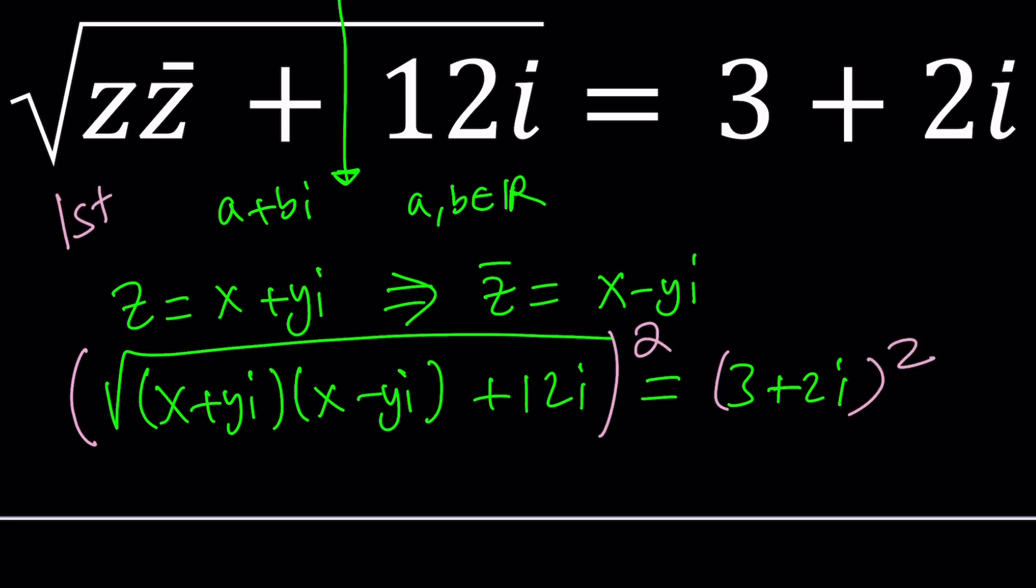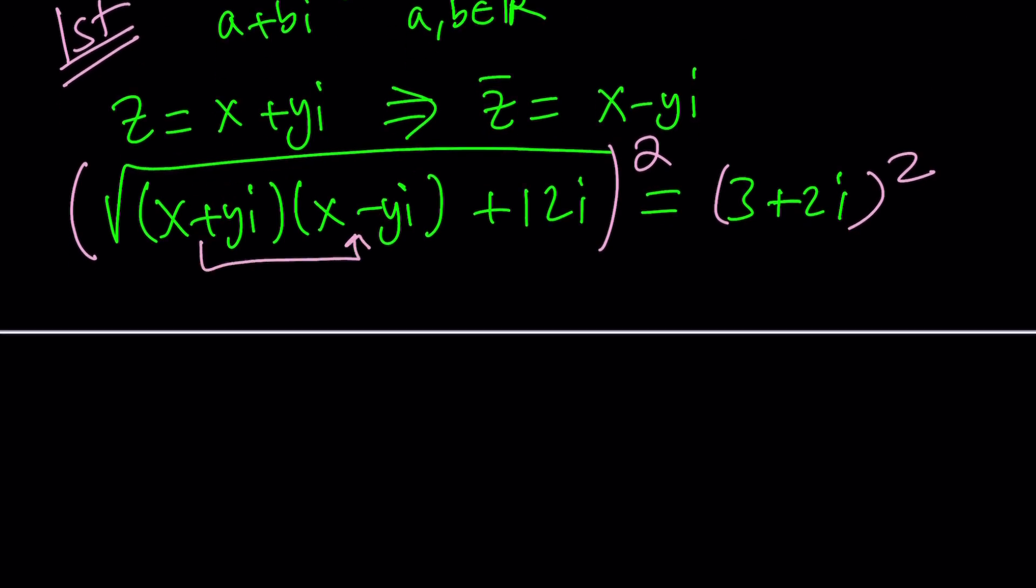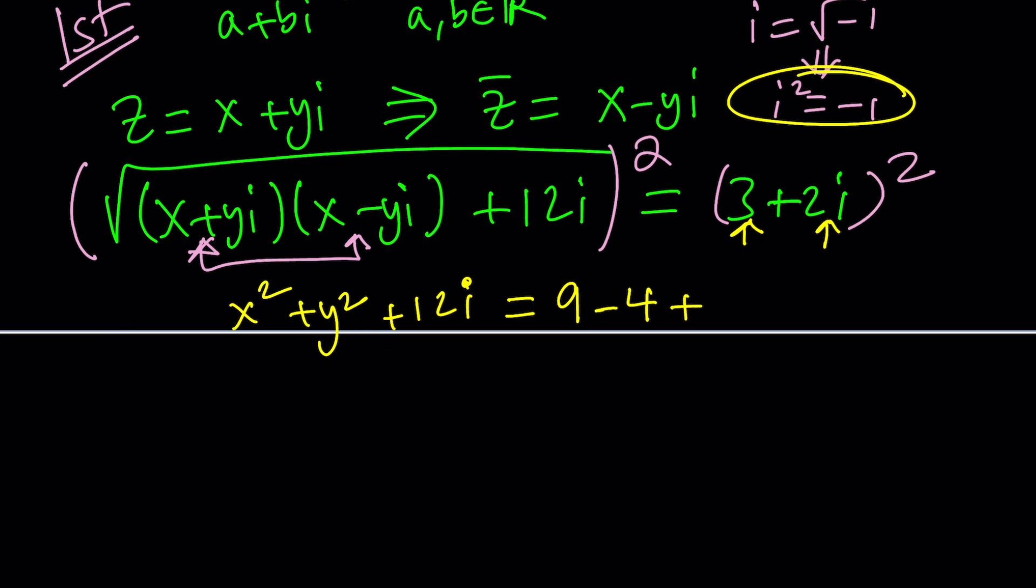By the way I'm calling this the first method because I'll show you an alternative. When we multiply these two things it looks like difference of two squares but since i is the square root of negative one, this implies that i squared is negative one which is something that you should never ever forget. It's super important. So when you multiply it just becomes x squared plus y squared. And then you get plus 12i and since we squared both sides we already got rid of the radical. On the right hand side, nine plus 4 i squared but i squared is negative one, so it's nine minus four plus 12i. This is the nicest part because 12i cancels out. Now we get something like x squared plus y squared equals 5.